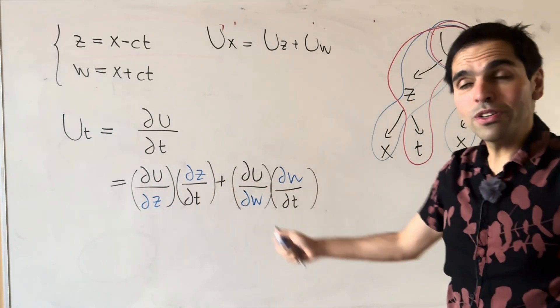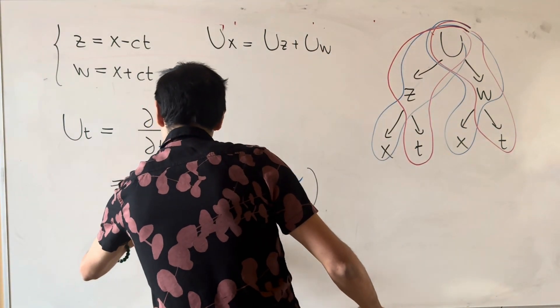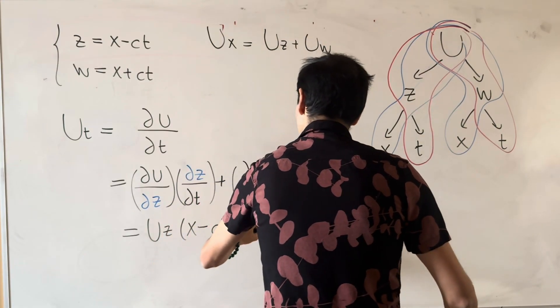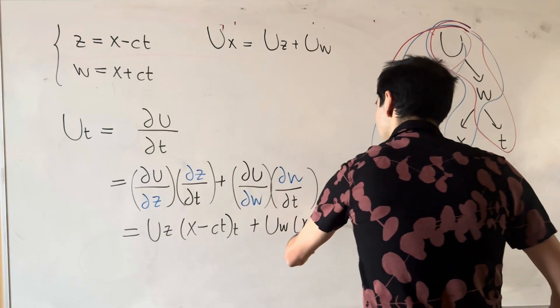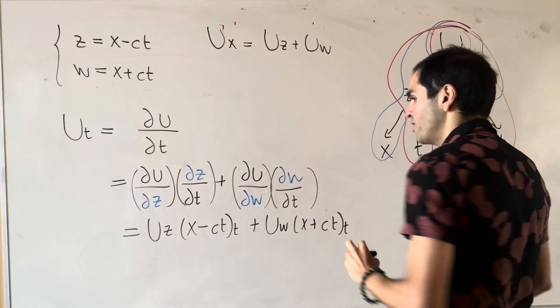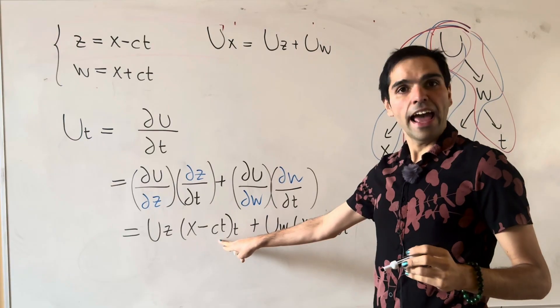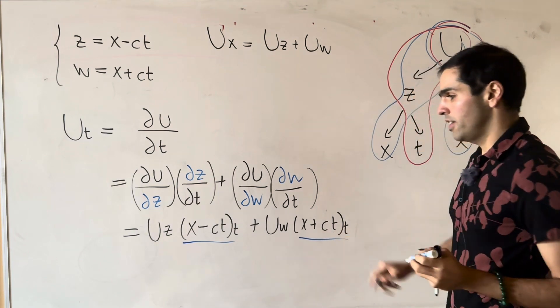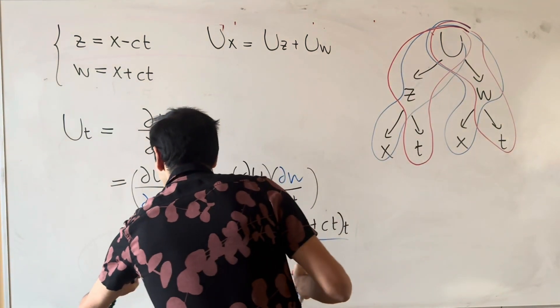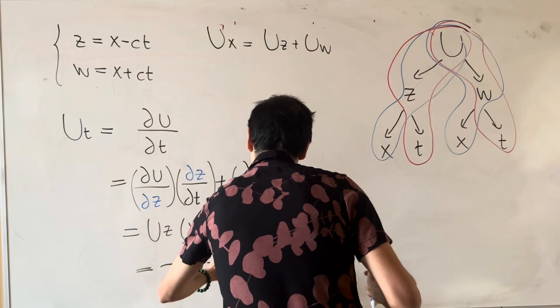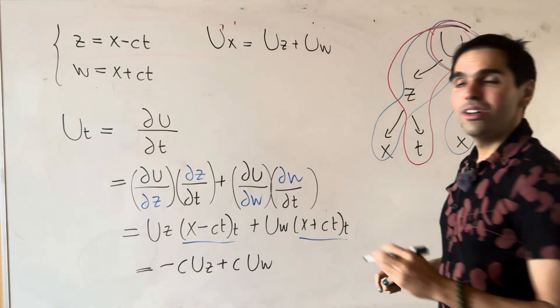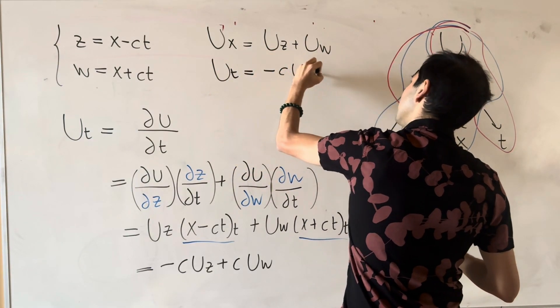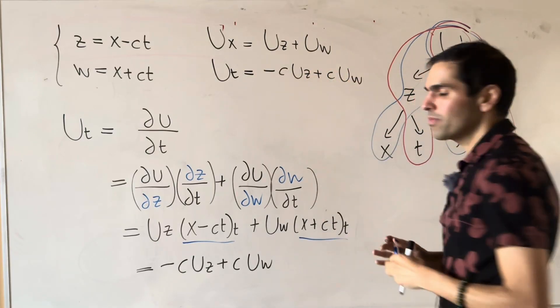And we're almost exactly the same. So this is U_z, and that becomes x minus ct with respect to t, and then U_w, and then x plus ct with respect to t. So here we get an extra minus c because of the chain rule, and here we get an extra c as well. And so in the end, we get minus c U_z plus c U_w. So let's record that as well. So U_t is minus c U_z plus c U_w.